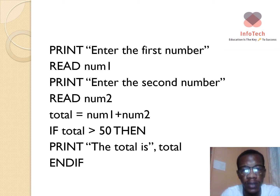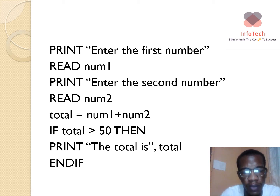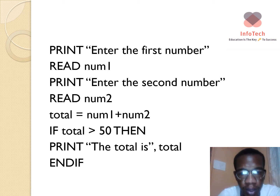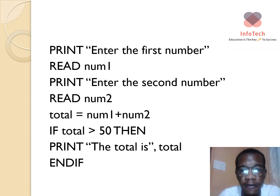We use two variables to represent the numbers: number one and number two. To find the total, we need to add these two variables together, and the result is stored in a variable called total. Remember, only if the total of the two numbers is greater than 50 will it print the total.